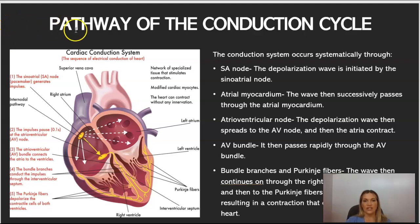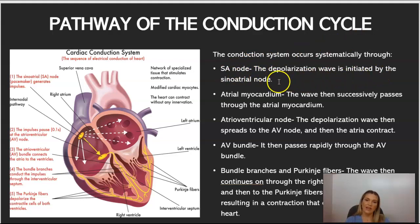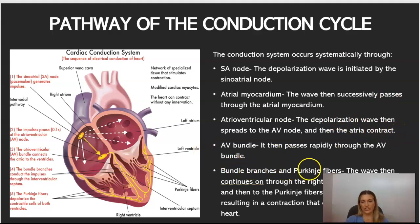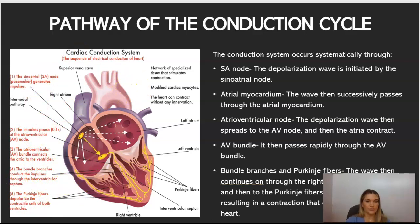Here is a pathway of the conduction cycle. The conduction system occurs systemically through: first, the SA node, where the depolarization wave is initiated by the sinoatrial node; second, the atrial myocardium, where the wave passes through; third, the AV node, where the depolarization wave spreads and the atria contract; fourth, the AV bundle; and fifth, the bundle branches and Purkinje fibers. Take some time to go through each step so you can see how that cardiac conduction cycle works.